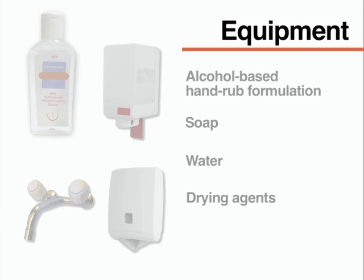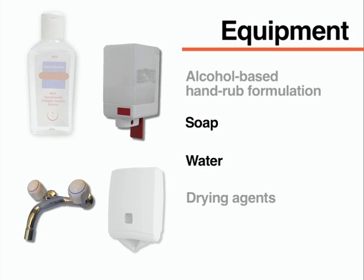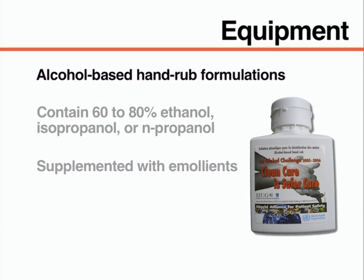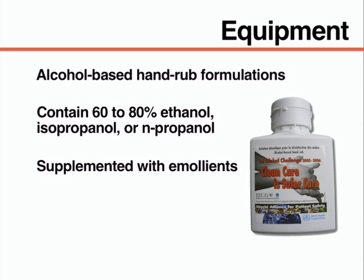To perform adequate hand hygiene, you will need an alcohol-based hand rub formulation or soap, water, and drying agents such as disposable paper or cloth towels. Use alcohol-based hand rubs with proven antimicrobial efficacy. These usually contain 60 to 80% ethanol, isopropanol, or n-propanol, or a combination of these products.